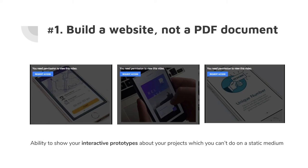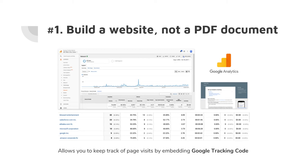A website allows you to embed interactive prototypes — iframes of your actual prototype or videos — things you can't do with a static PDF. I also added a Google Analytics tracking code early on, just a simple line of JavaScript you embed, and then check it every week. For example, I noticed people visited one project for only five seconds and opted out — that tells me how to make content more engaging. You can even see which companies are visiting your website before interviews.